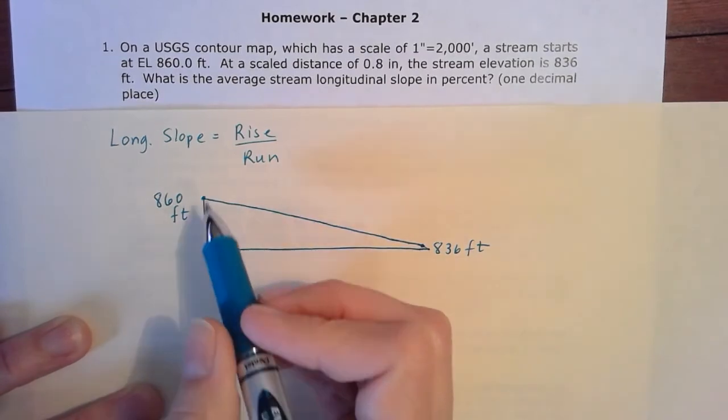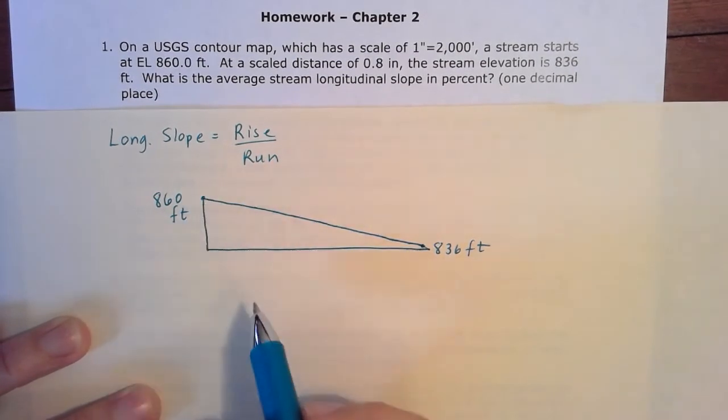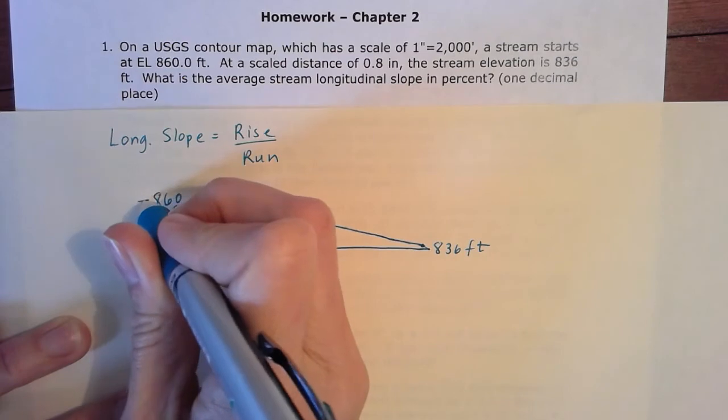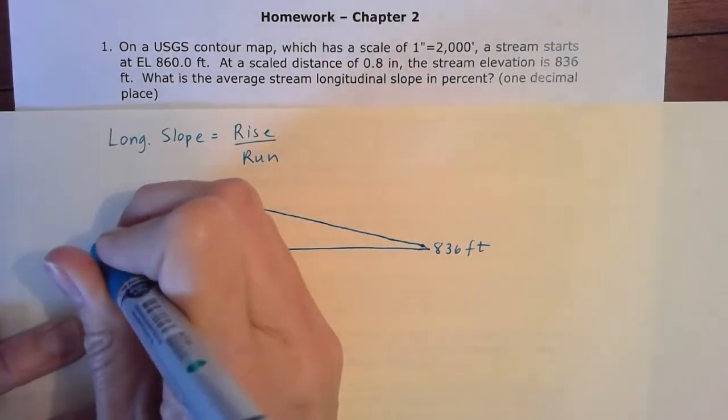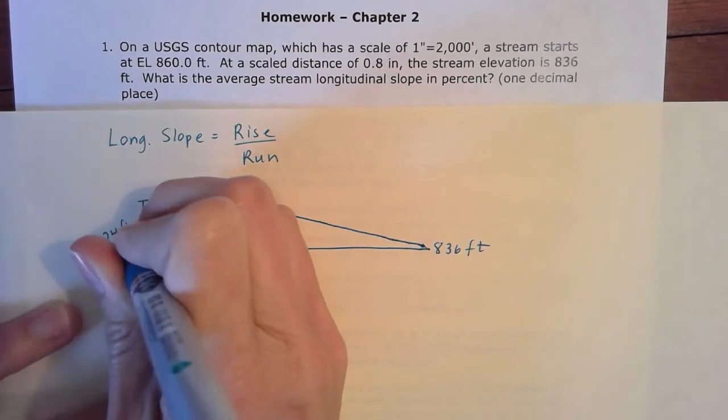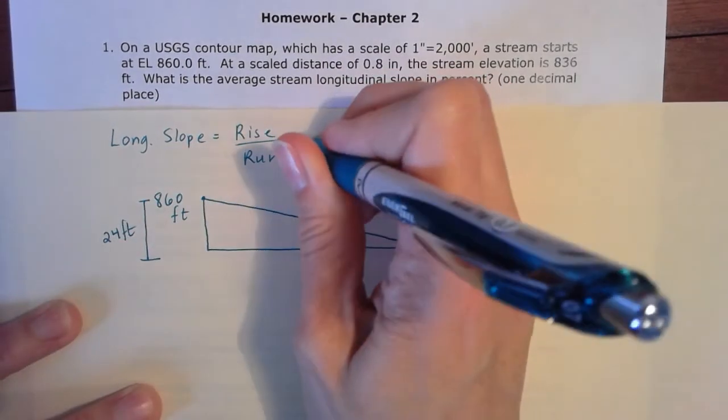Our rise here is going to be that difference between 860 to 836. So we do 860 minus 836 and get 24 feet. So that is our rise in this equation.